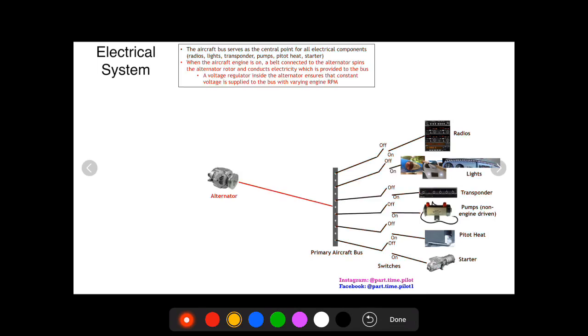So the alternator is our primary source of electricity when the aircraft engine is on. A belt connected to the alternator from the spinning engine spins a rotor inside the alternator which spins around the stator and it conducts electricity. So also inside this alternator is a regulator. So since the engine spins at different RPM, this alternator is also going to spin at different rates.